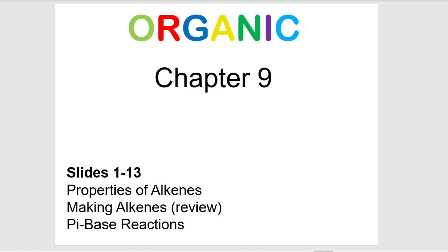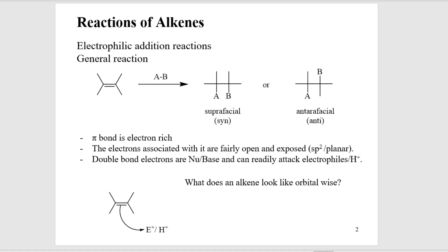Chapter 9, slides 1 to 13. In this chapter, we're going to start looking at a different functional group. We were looking at alkyl halides for the last couple chapters, doing substitution chemistry and elimination chemistry. We're going to see those mechanisms come back again. However, we're going to be focusing on a new functional group, the alkene.